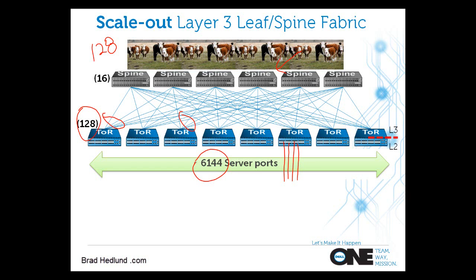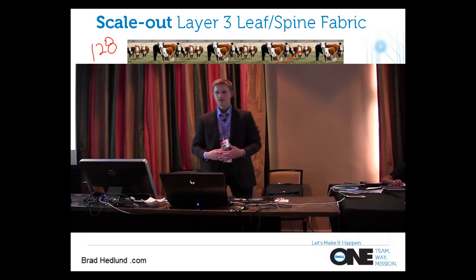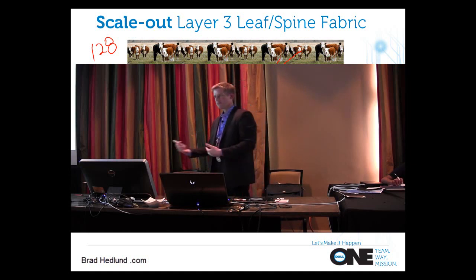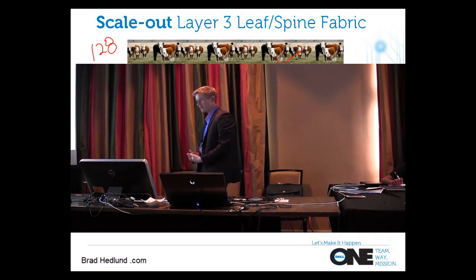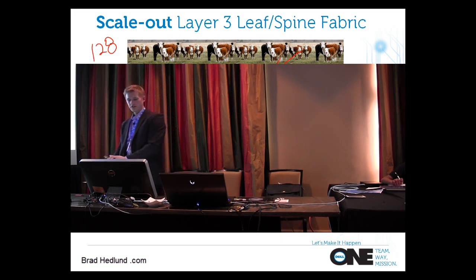This is a Layer 3 fabric — there's the Layer 2 to Layer 3 gateway. This is running a routing protocol from the leaf to the spine: OSPF, IS-IS, BGP, whatever you choose. So we want to be aware of that.